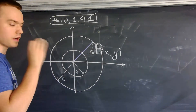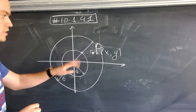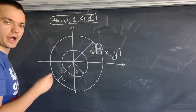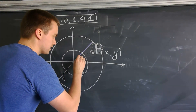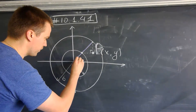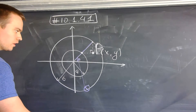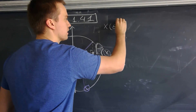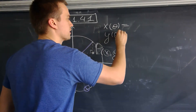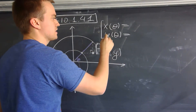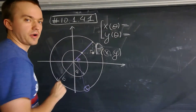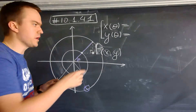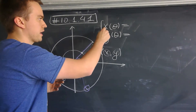The way to approach this problem is to use parametric equations. With this line segment, I have one really important parameter: the angle theta. I want to rewrite x in terms of theta and y in terms of theta, then eliminate the parameter to get the closed-form equation of this curve.